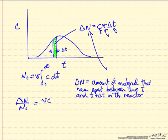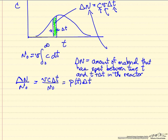So ΔN equals volumetric flow rate times the concentration over that interval delta t, divided by N₀. We're going to call this P(t)Δt, and then of course what we're interested in is as Δt becomes small, becomes a differential, then we're going to have P(t)dt. This P(t) then is our residence time distribution.